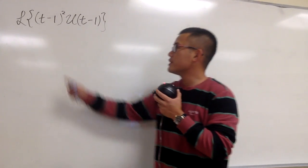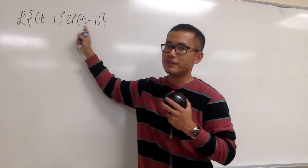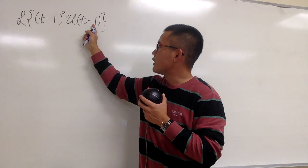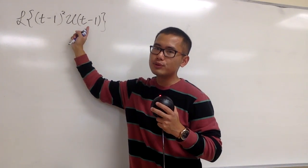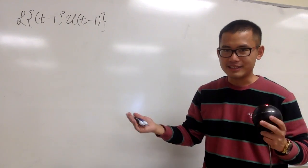Okay, we're going to find the Laplace transform of the function (t-1)² times u(t-1). This is the unit step function, and notice that the inputs right here match. That's a good thing.